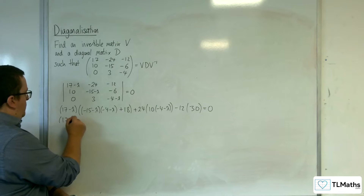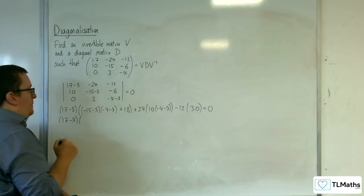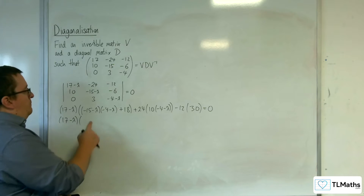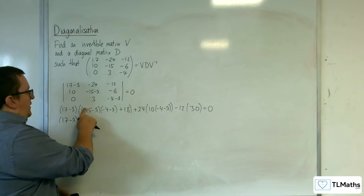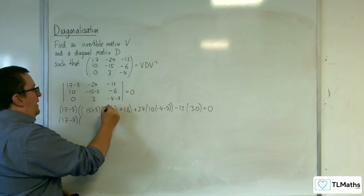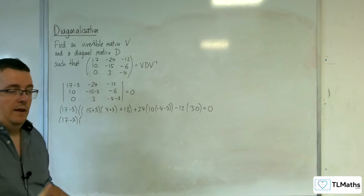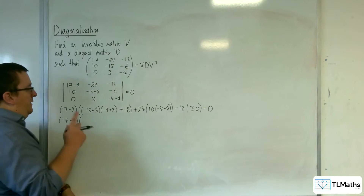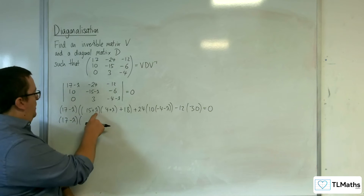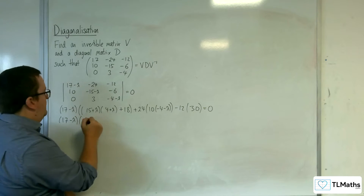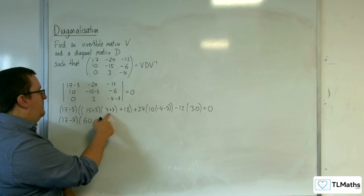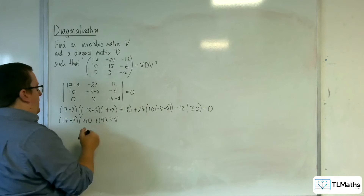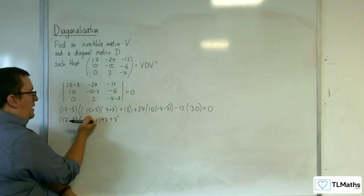So we have 17 minus lambda times — because all of these elements are negative, we can take the minus sign out of both of them, factor those out, and just get the positive. That makes things a little bit nicer, we don't have to worry about minus signs now. So we've got 15 times 4, so 60, we've got 15 lambda and 4 lambda so 19 lambda, then plus lambda squared, and we've got the plus 18 there as well, so 78.